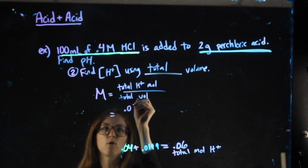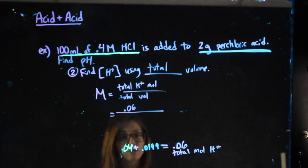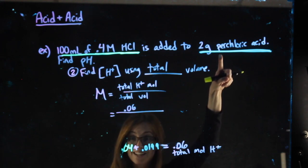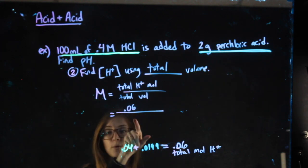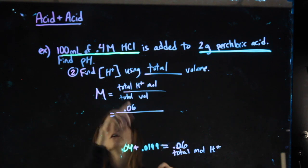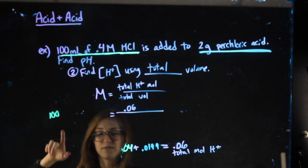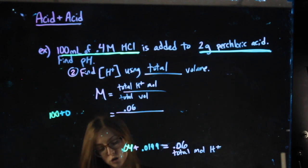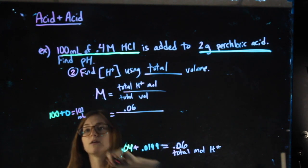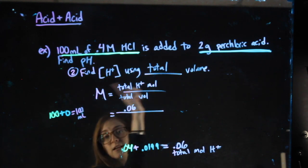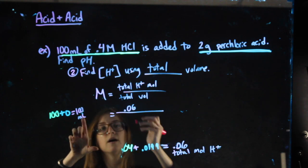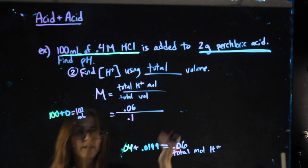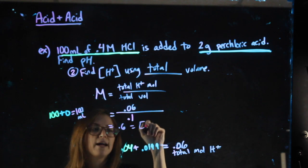So my total H+ moles, which we found before, 0.06. My total volume, normally, if this was 100 milliliters and this was 200 milliliters, we'd have 100 and 200, we'd add them together and we'd use 300, but turned into liters. Here we have 100. Here, I'm going to find total volume off to the side. Here we have 0, because again, there's no volume mentioned, so my total volume is 100 mLs. In the try problem, you'll see they both have milliliters provided, so you'd actually add those numbers together, and then turning it into liters to plug it in. And we get 0.6 as my H+ molarity.